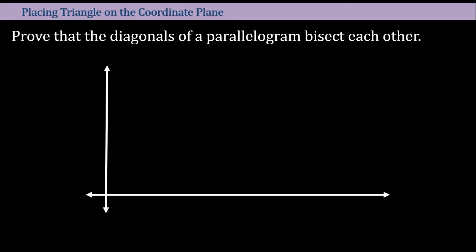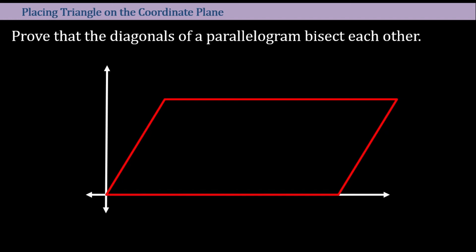At this point, we're going to prove some properties using the placement of a quadrilateral on a Cartesian plane. Today we're going to prove that the diagonals of a parallelogram bisect each other. First, we need to place a parallelogram on the Cartesian plane — it doesn't matter what kind; it could be a square, a rectangle, or a rhombus, as long as it is a parallelogram. Let's mark the points A, B, C, and D.